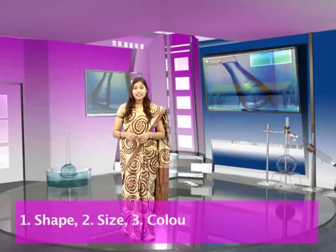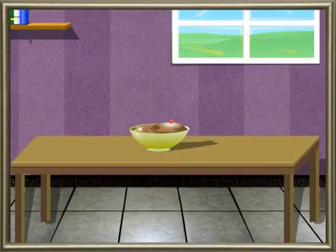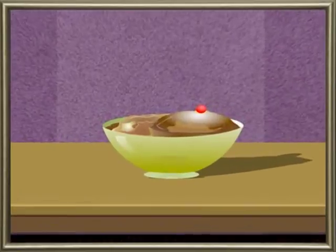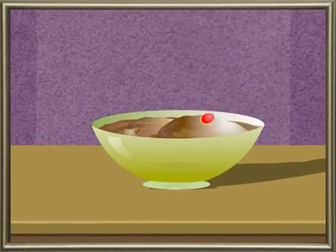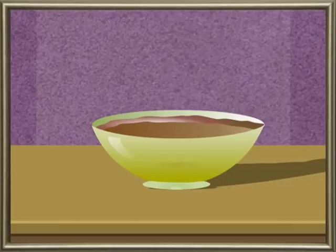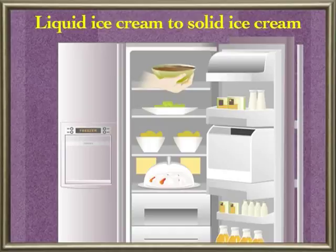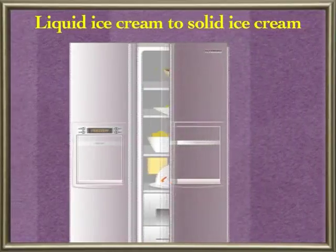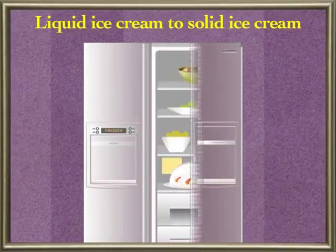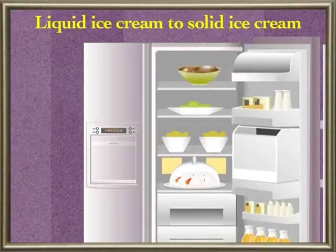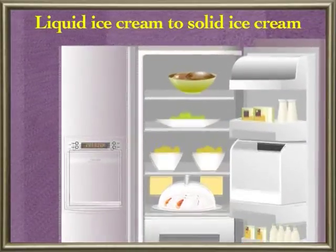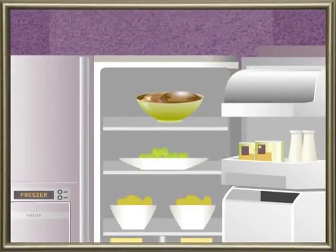Physical properties include shape, size, colour, and state of matter. Let us observe this example: here is a chocolate ice cream. It is lying outside and melted because of high room temperature. But this melted ice cream will be put back in solid state only when it is put in a freezer. When the ice cream melted, its state of matter changed from solid to liquid, which is a physical property. Note that no new substances were created.